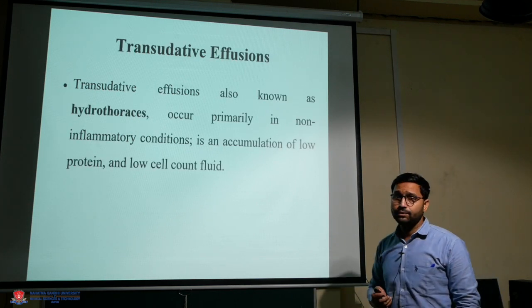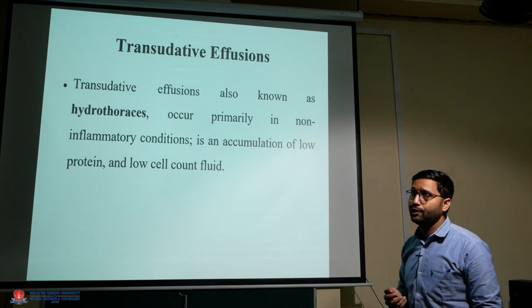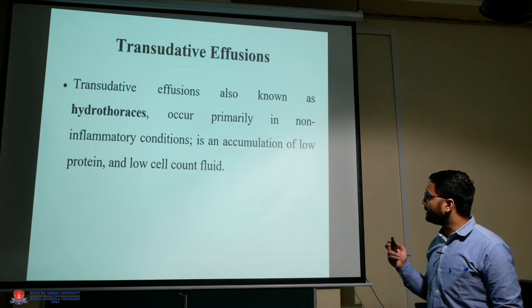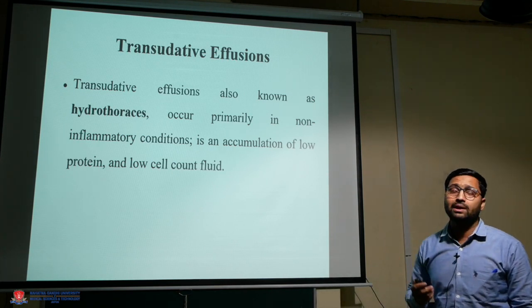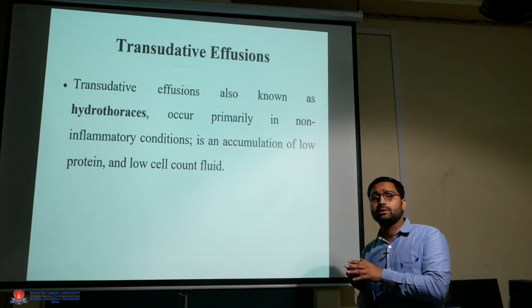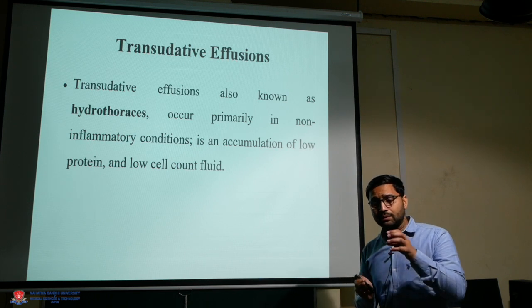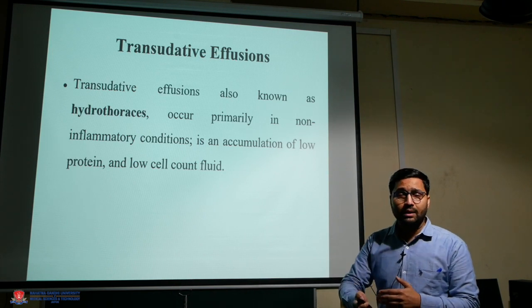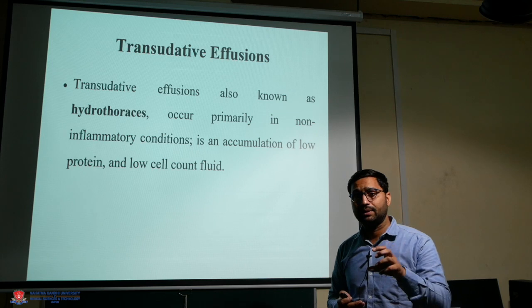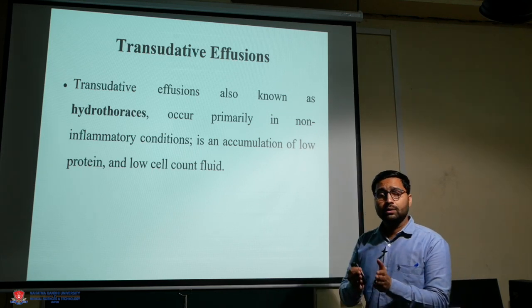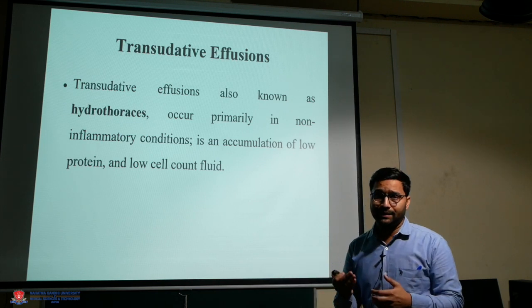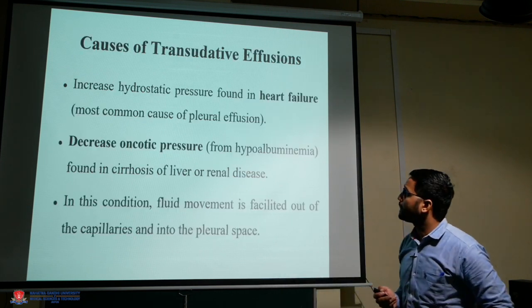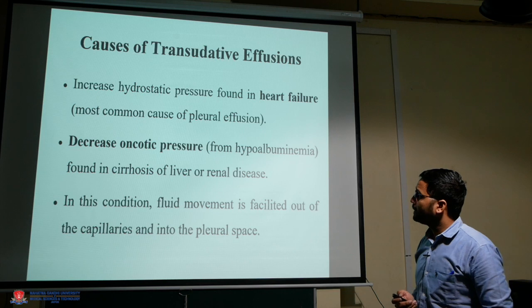Transudate effusion, also known as hydrothorax, occurs primarily in non-inflammatory conditions. It is an accumulation of low protein and low cell count fluid. In this condition, hydrostatic pressure is increased compared to the oncotic pressure, and fluid escapes from the intravascular space to the interstitial space, also called the third space.